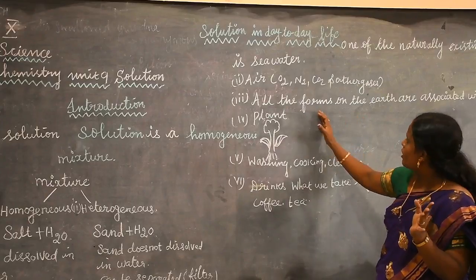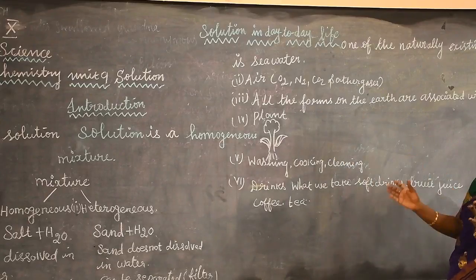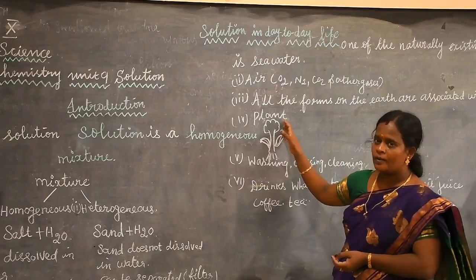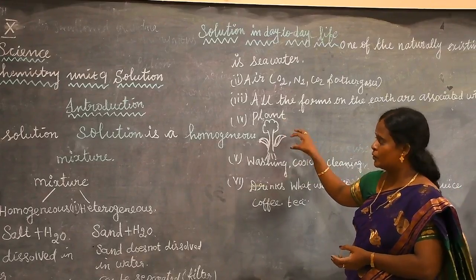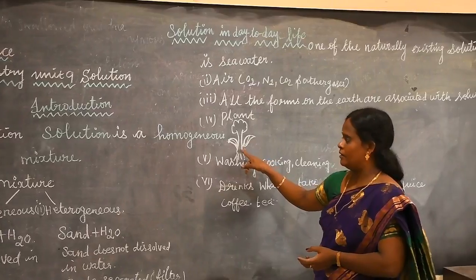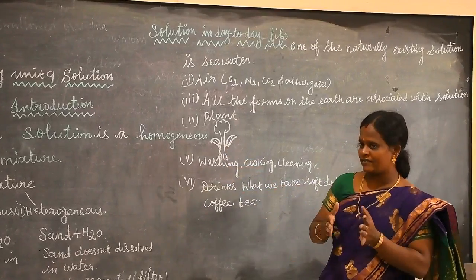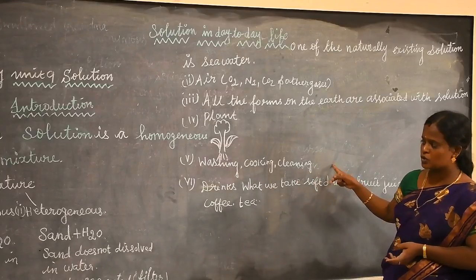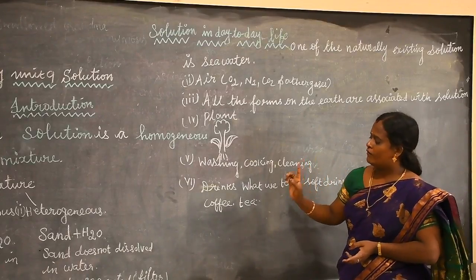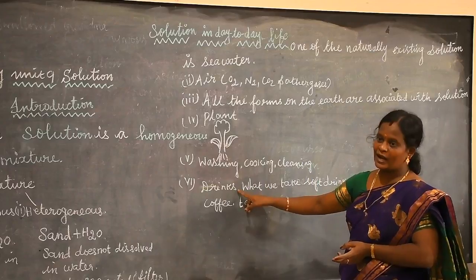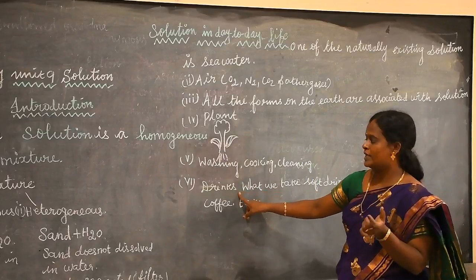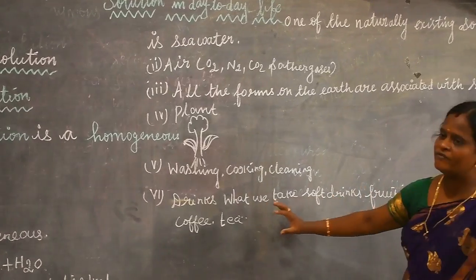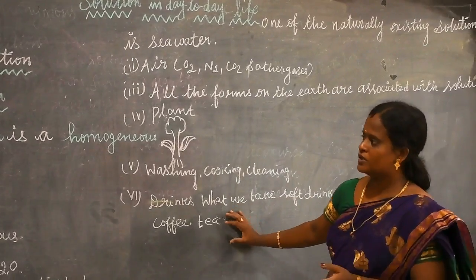All the forms of life are associated with solutions. For example, a plant gets its solution from the nutrients from the soil. There are regular activities like washing, cooking, and cleaning that involve the formation of solutions. What we drink — coffee, cold drinks, soft drinks, juice, tea — all are solutions. These are the regular solutions in our day to daily life.